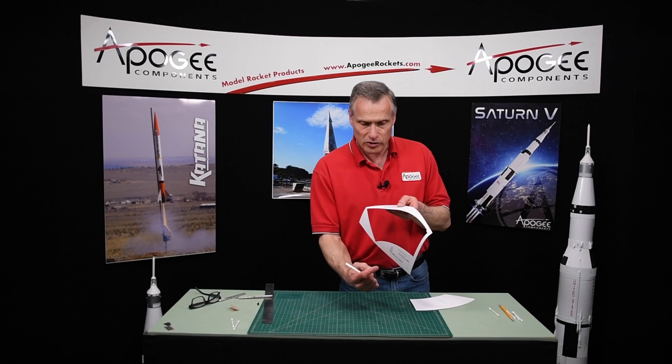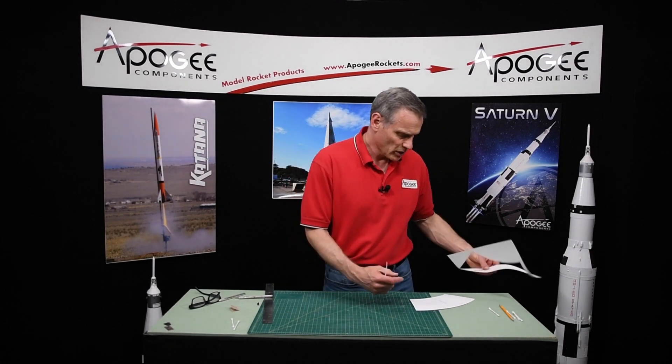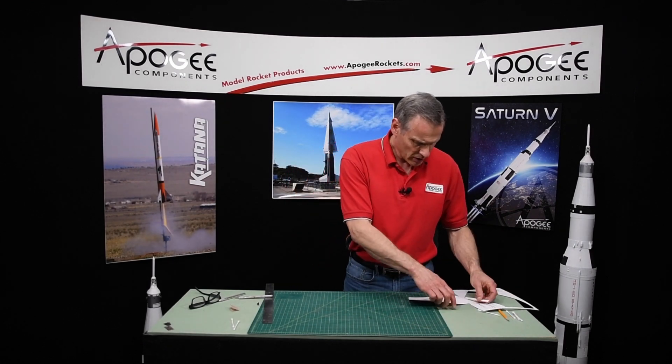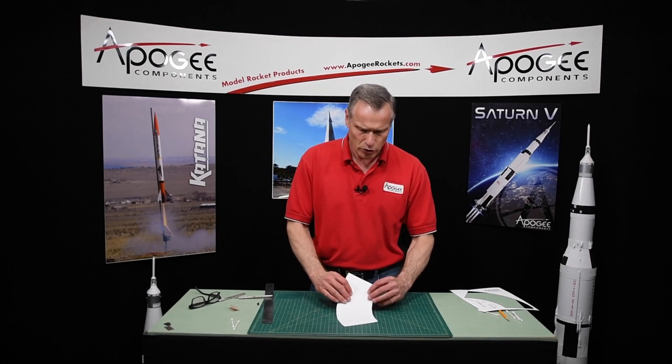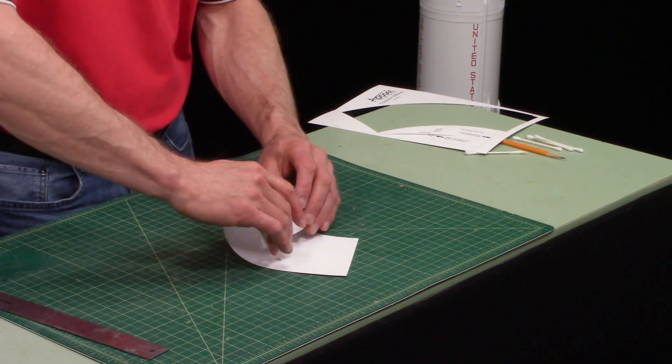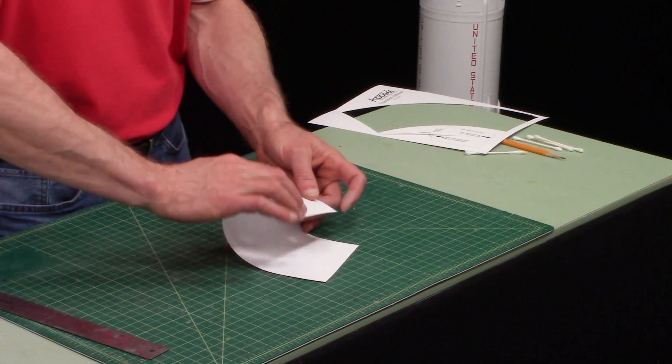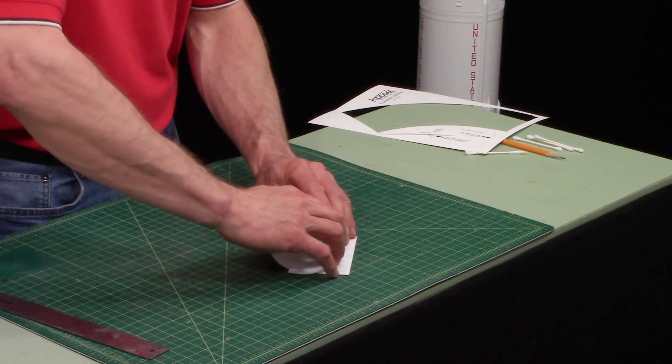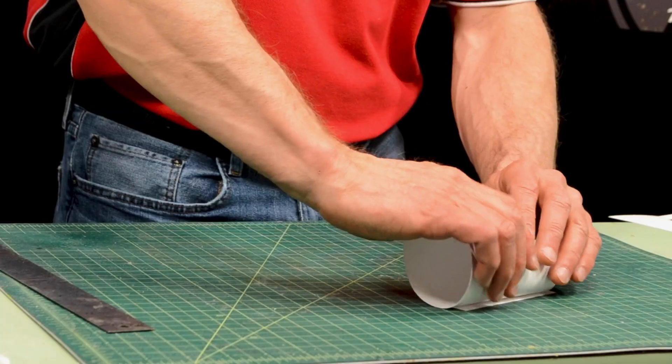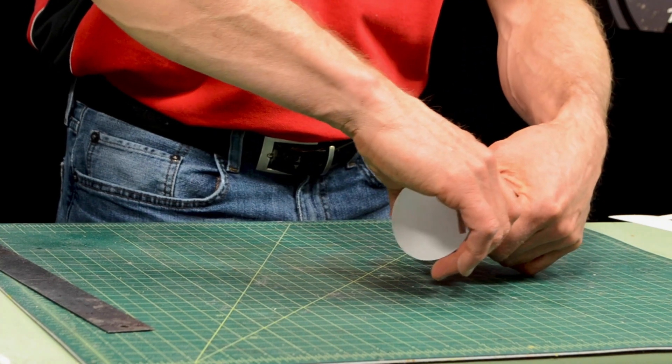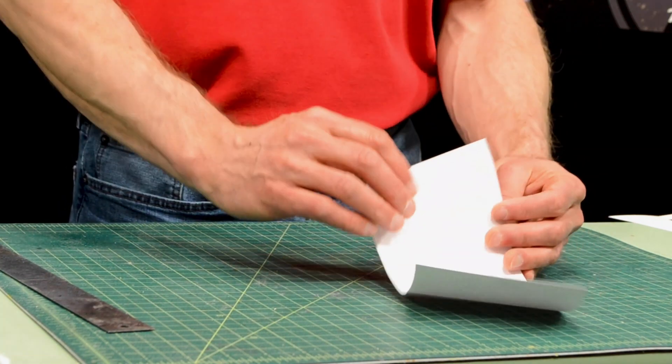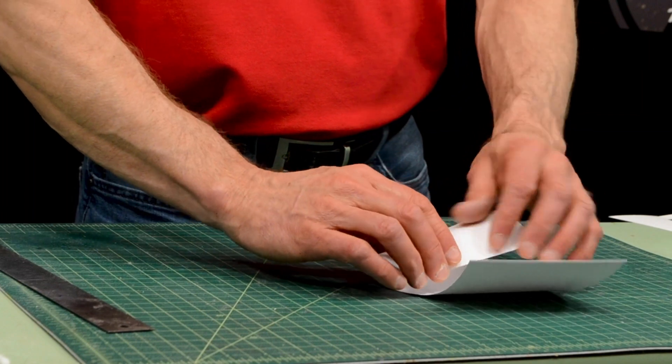Okay, save this part because you're going to need this for the upper part. Then we want to take this and curl it. I'm going to do it very gently not to crease it, and then open it and curl the other direction.